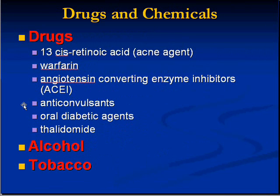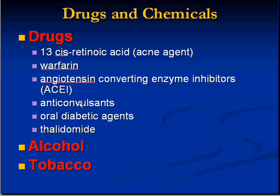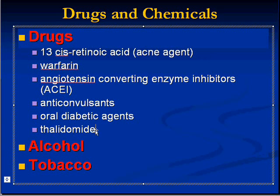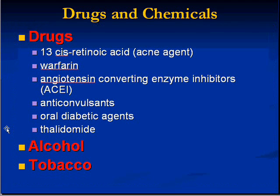Drugs and chemicals are not surprising causes. Besides alcohol and tobacco, which are notoriously damaging to the fetus, common drugs normally considered helpful — such as warfarin, ACE inhibitors, anticonvulsants, oral diabetic agents, and acne agents like 13-cis-retinoic acid — have been associated with surprisingly high rates of fetal anomalies and therefore are not used in pregnancy. The classic example was thalidomide in the 1950s, a very popular drug associated with causing very major, bizarre fetal anomalies, and it is no longer used.